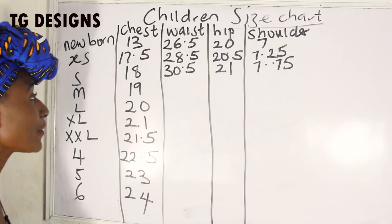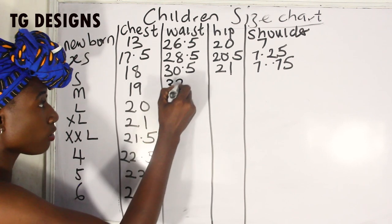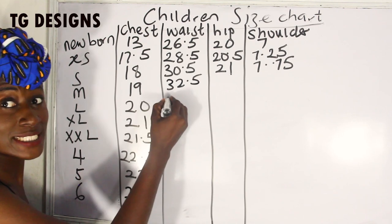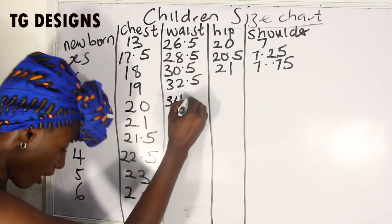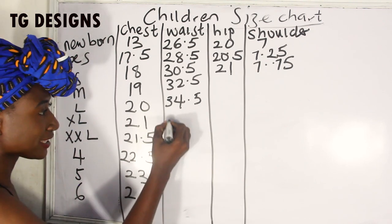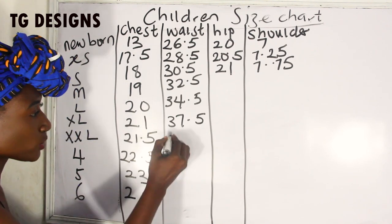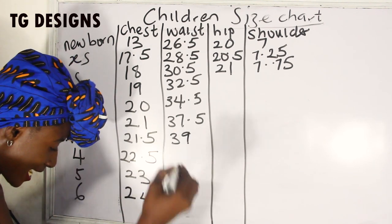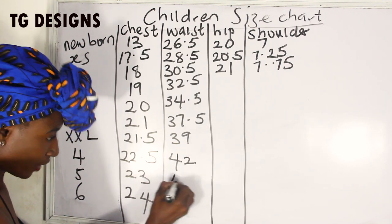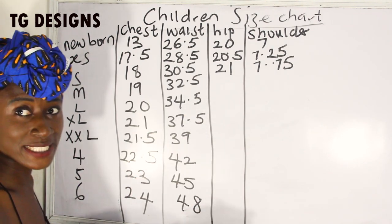Now for the waist measurements, starting at medium we have 32.5 inches, then adding roughly two inches each time: the next is 34.5. Moving into extra large we have 37.5, then 39, and continuing upward we have 42, 45, and 48 inches. Towards the larger sizes we started adding three inches instead of two.